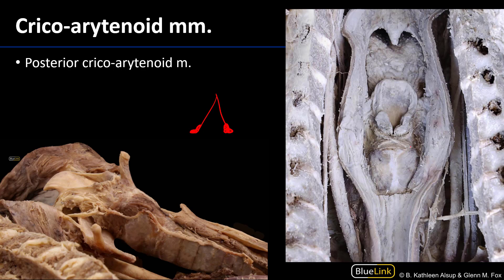The posterior cricoarytenoid muscles come from the posterior aspect of the cricoid cartilage and attach to those muscular processes, such that when they pull, the arytenoid cartilage pivots laterally — so that muscular process goes out. What that does is it abducts the vocal folds so as to make the rima glottidis larger. So this is the position for wholesale ventilation.